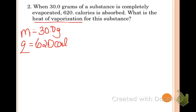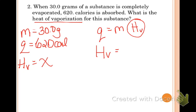They want to know what the heat of vaporization is for this substance. Remember, they're not saying this is water, so you can't use water's value. You want to find the heat of vaporization. That's your unknown. Let's go over to your equations. Q equals mass times Hv for vaporization. We want to solve for heat of vaporization, so let's rearrange our equation. Hv equals Q over M. Now let's plug in our values. We have 620 calories over 30.0 grams.